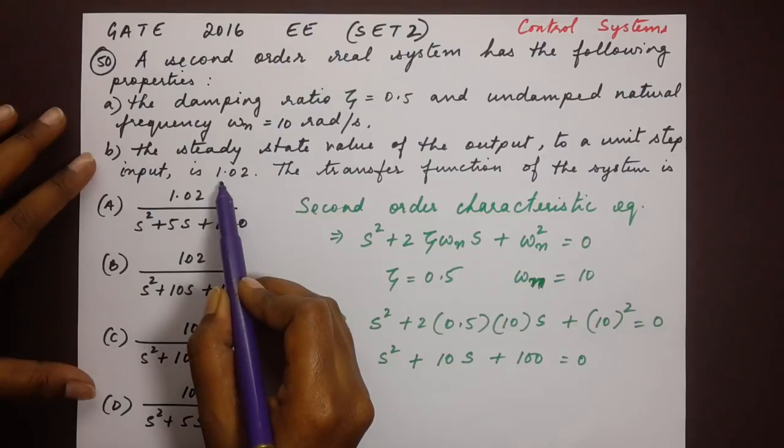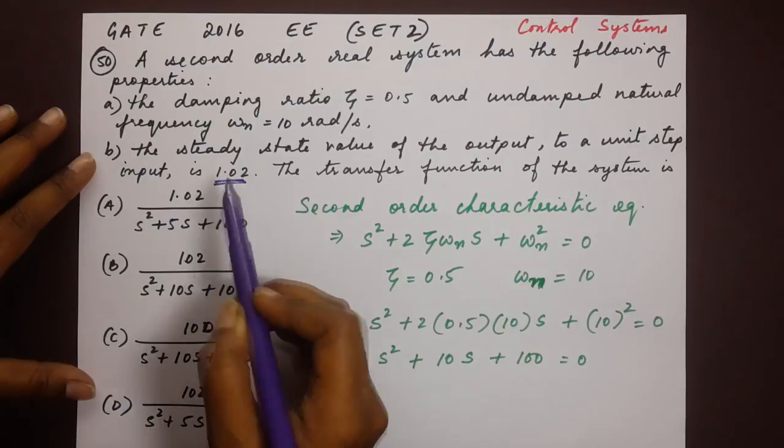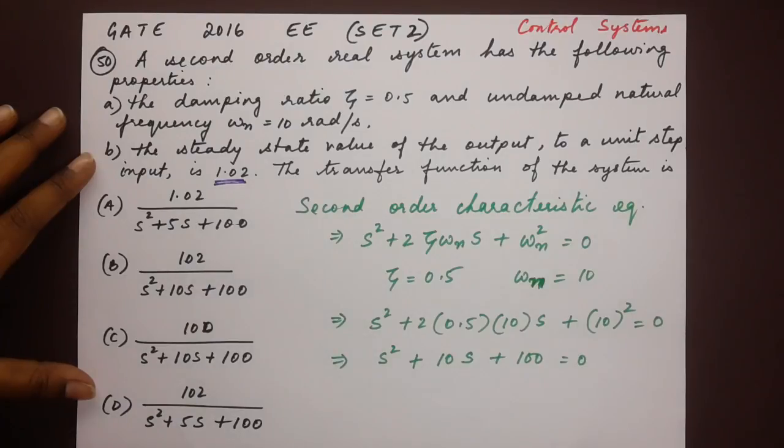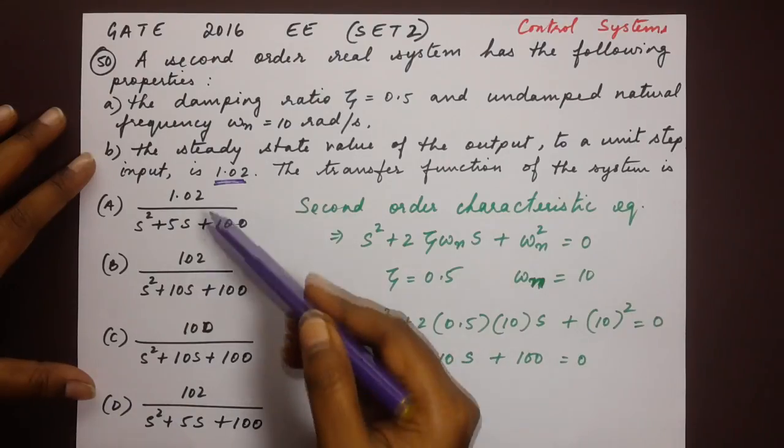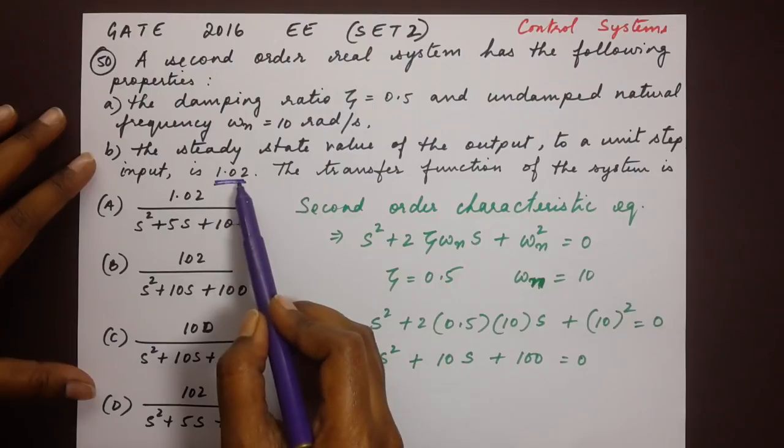We have the steady state value of the output to a unit step input, so the ratio is given as 1.02. We have to check with the options which one matches with this ratio.